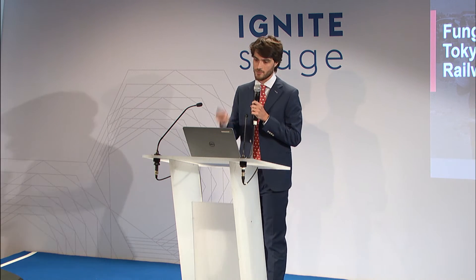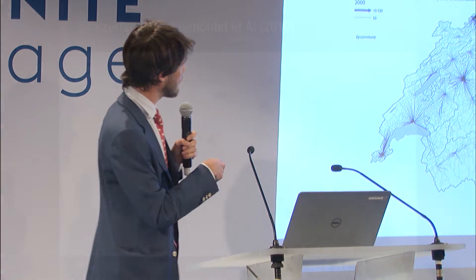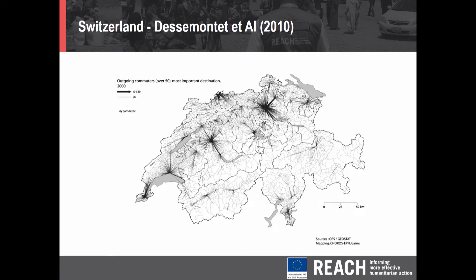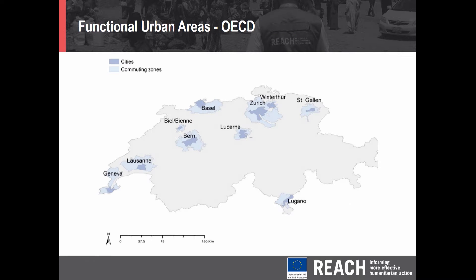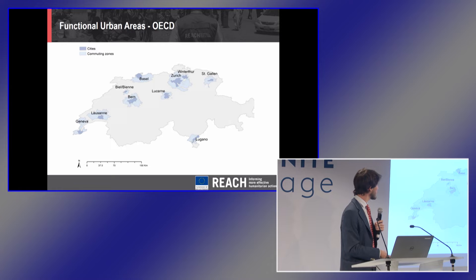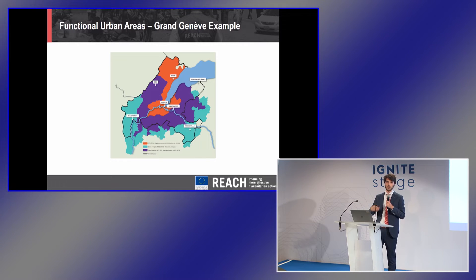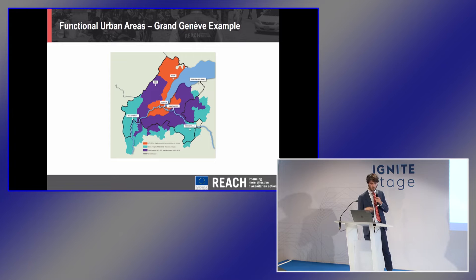Very much like the fungi, cities connect people and resources in what we think is the most effective way, and you find these networks beyond traditional administrative boundaries. Researchers at EPFL showed that cities like Geneva, Lausanne, and Zurich attract commuters from beyond their boundaries — what the OECD calls functional urban areas. If you translate these networks into polygons, Switzerland looks something like that: city cores where most activity is concentrated, surrounded by commuting zones in light purple.